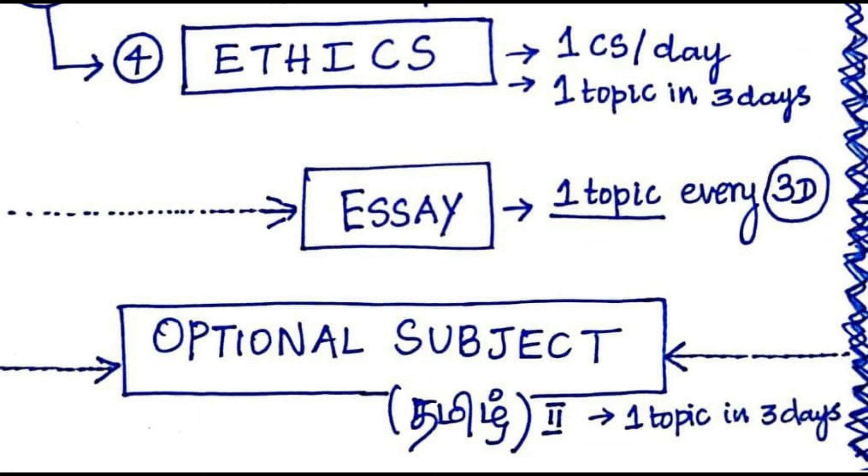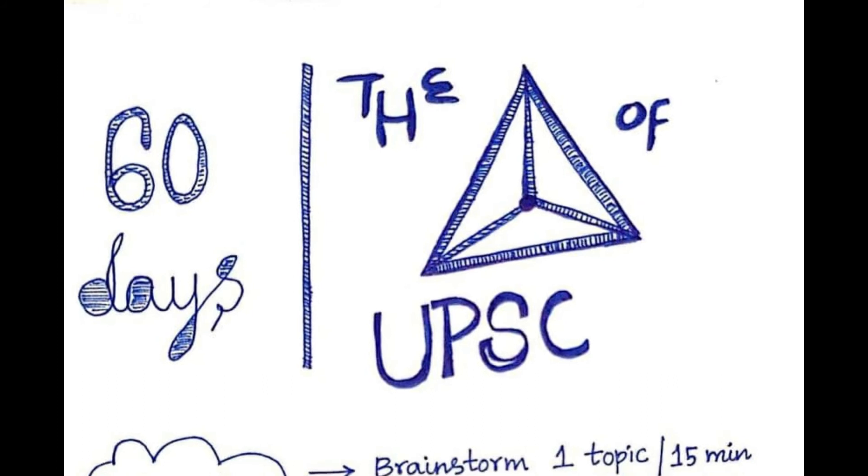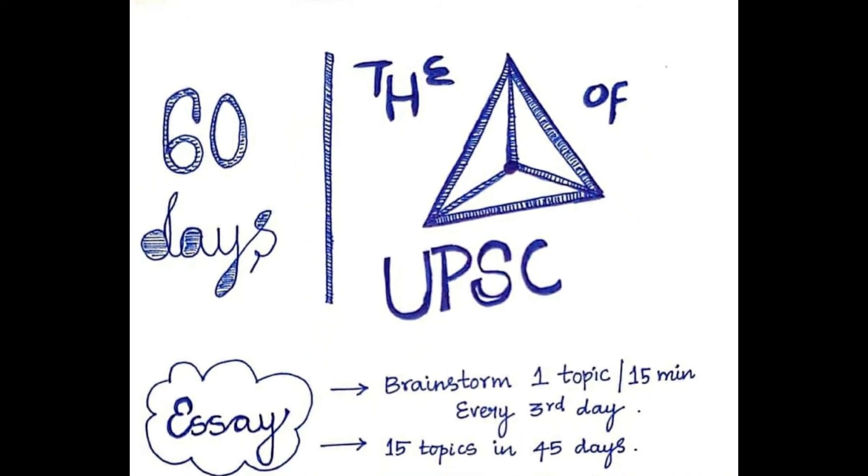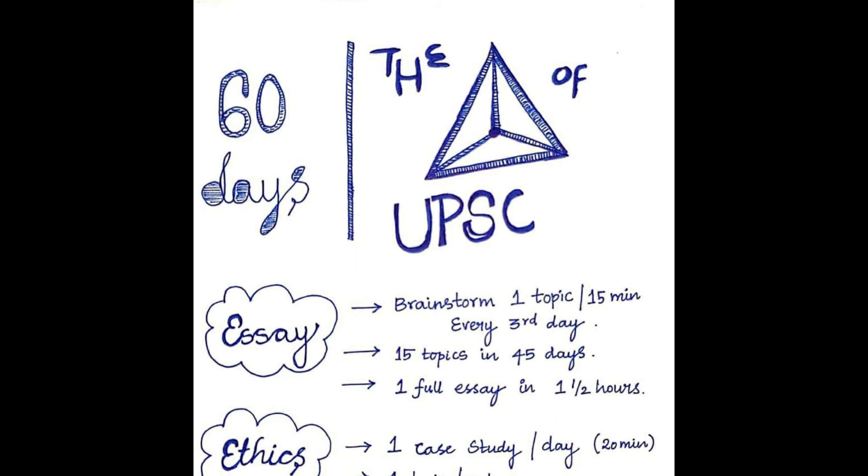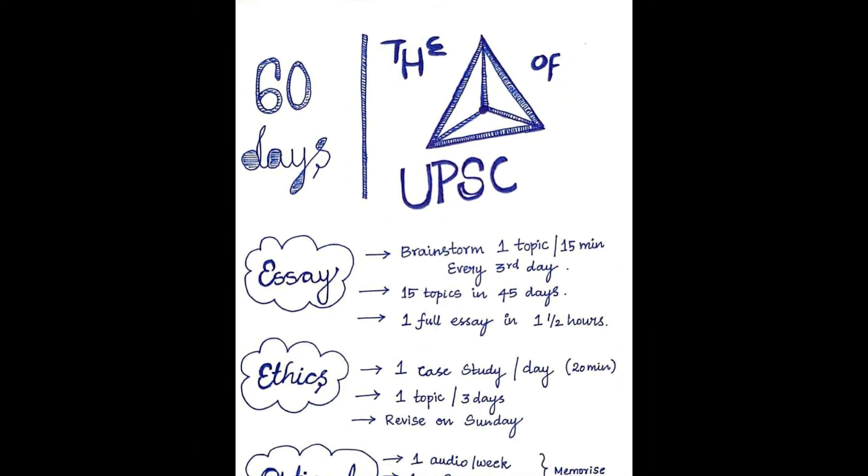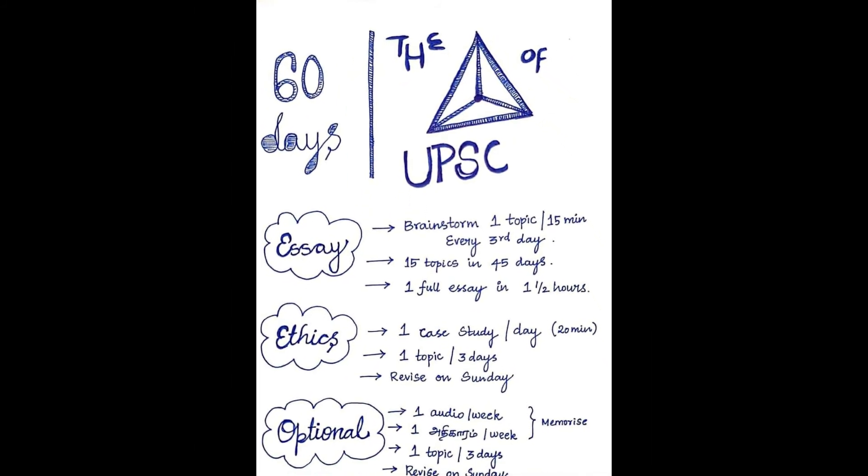Now, coming to the third point of our triangle which is general studies paper 4, Ethics, Integrity and Aptitude. I will come up with a separate video explaining the strategy of ethics. With respect to ethics, I guess you are aware of the fact that the question paper of ethics itself is divided into two sections, section A and section B. Section B contains case studies, so I would request you to practice at least one case study per day. I have made a separate video with respect to this precious triangle of the UPSC mains examination explaining the strategy with respect to ethics, essay and optional subject. Please see that to get a clear idea.